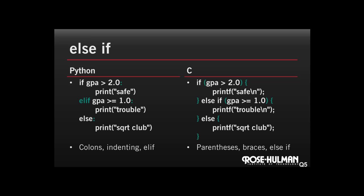All right, so here's the differences. We had the colon and indenting in the Python part as before. In Python, to do an else if, we use the keyword elif, E-L-I-F. In C, we actually just have a regular else and then another if statement that starts after the else.